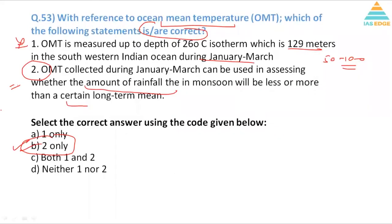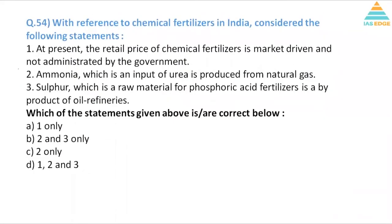Question number 54, with reference to chemical fertilizers in India, consider the following statements. At present the retail price of chemical fertilizer is market driven and not administered by the government. Now that is not true, fertilizers are regulated, the price is regulated, so one is incorrect. Ammonia which is the input of urea is produced from natural gas. Yes, it's a chemical industrial preparation done through natural gas only, CO plus H2.